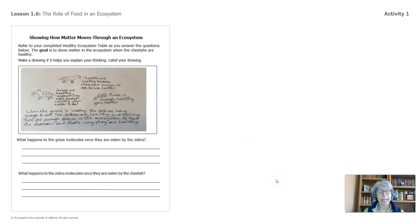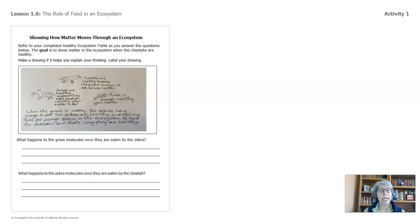Alright, welcome back. Now here's a drawing that I've made — let me walk you through it. I started with cheetahs. Cheetahs are healthy because they have enough to eat — they have zebra matter to eat. The zebras are healthy because they have enough healthy grass matter to eat. And there's enough healthy grass matter when the grass is healthy, so the zebras have enough to eat. The zebras are healthy and thriving, and there are enough zebras in the ecosystem to feed the cheetahs, and that's why they are healthy.